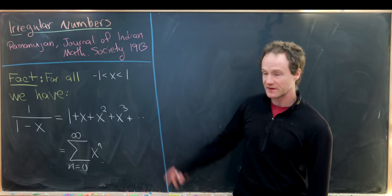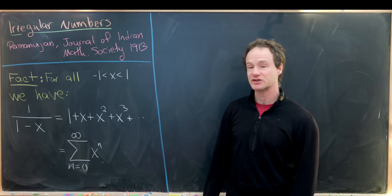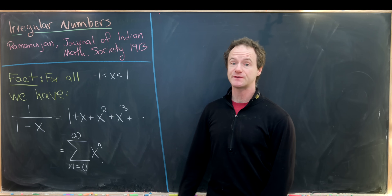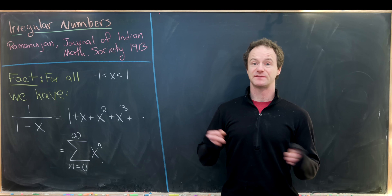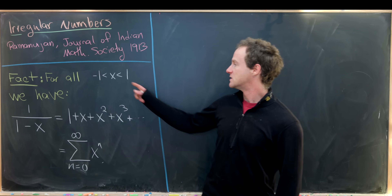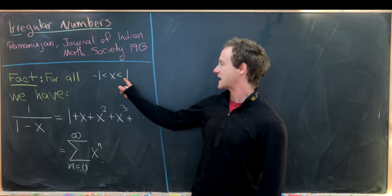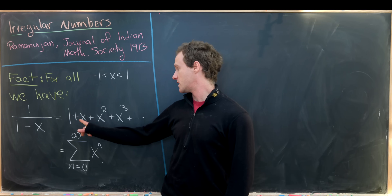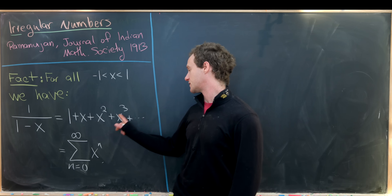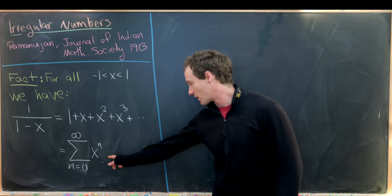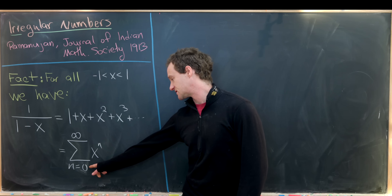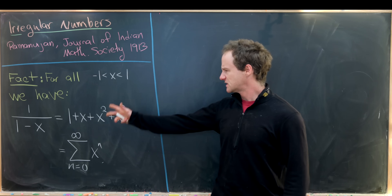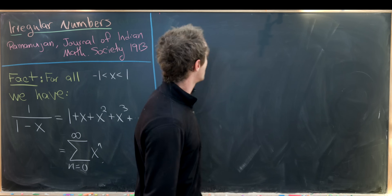We're going to start with the following fact, which is the expansion of a geometric series. I really can't stress enough how useful it is to recognize expansions of geometric series. For all x between negative 1 and 1, we have 1 over 1 minus x equals 1 plus x plus x squared plus x cubed, and so on. We could write that in summation notation as the sum as n goes from 0 to infinity of x to the n.